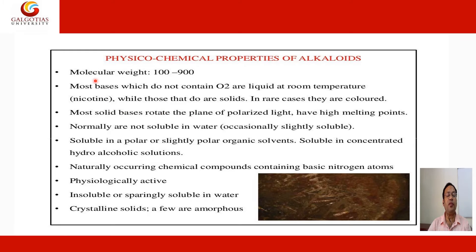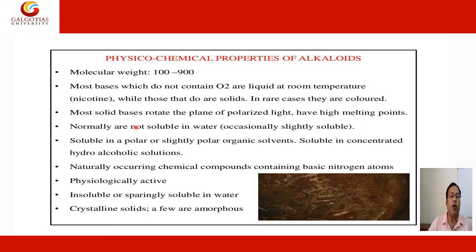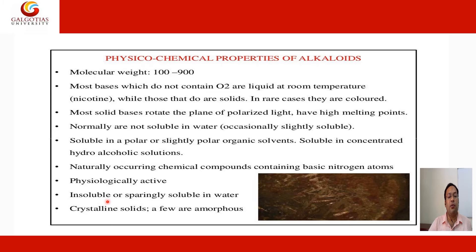Physicochemical properties of alkaloids: Molecular weight ranges from 100 to 900. Most bases which do not contain oxygen are liquid at room temperature, like nicotine. Those that are solid are rarely colored. Most solid bases rotate the plane of polarized light and have high melting points. They are normally not soluble in water, occasionally slightly soluble. They are soluble in polar solvents or slightly polar organic solvents, and soluble in concentrated hydro-alcoholic solution. Alkaloids are naturally occurring chemical compounds containing basic nitrogen atoms, physiologically active, insoluble or sparingly soluble in water, and generally crystalline or amorphous solids.